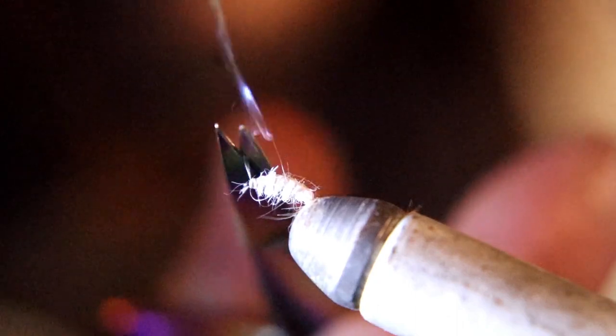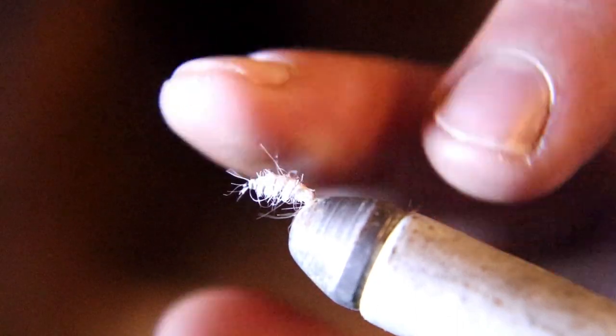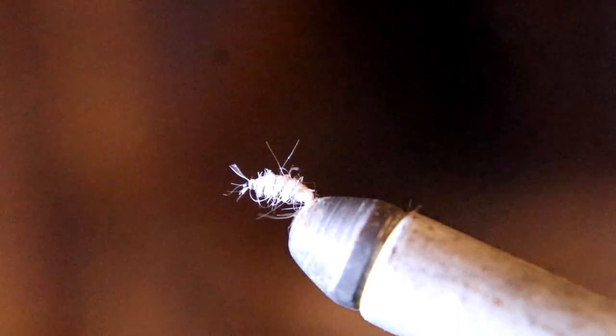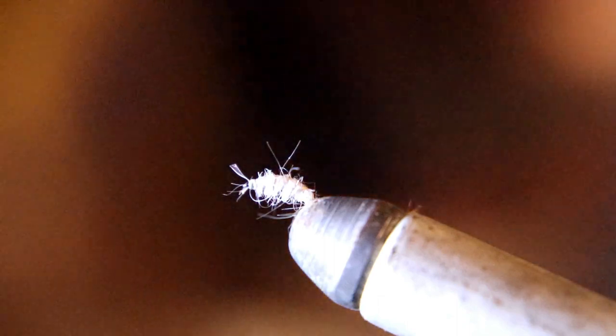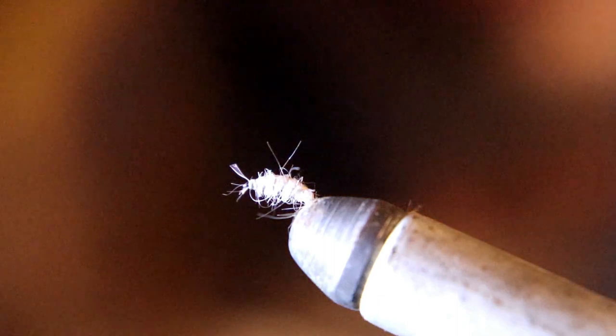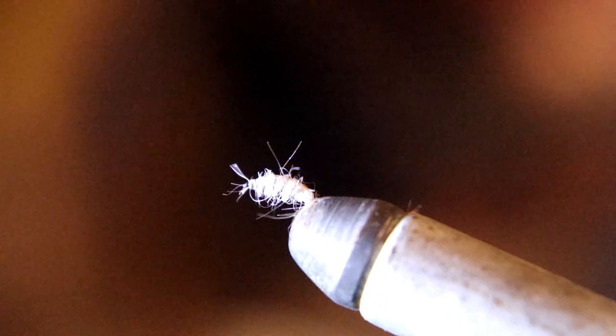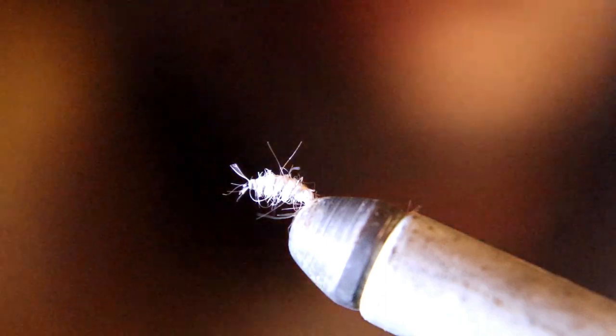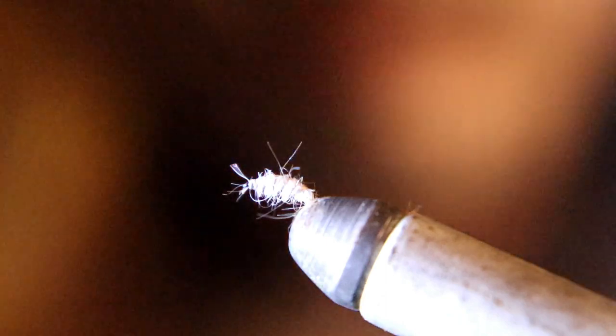Then I pull back on the tinsel again to make sure the eye of the hook isn't crowded, and then I leave just a little piece tag sticking out, maybe about an eighth of an inch. That represents the tail of the shrimp, or the things they have hanging off the back of them.